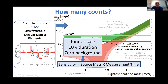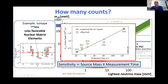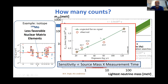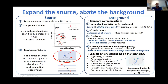Zero background is critical because sensitivity scales as source mass times measurement time in that regime — fully exploiting the detector mass. The only experiment that has truly operated in zero-background mode so far is GERDA, where we can see the linear dependence of the half-life limit on exposure from 2013 to 2020. This is the target for all future experiments. The general requirements for next-generation experiments: expand the source and suppress background.